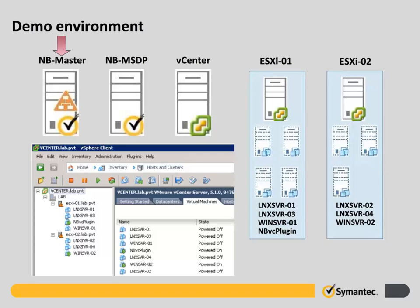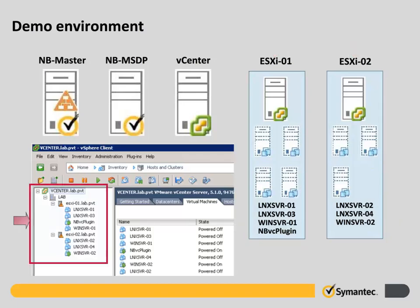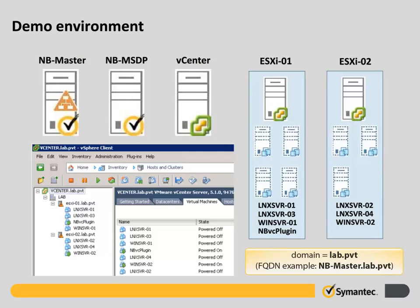First, the NetBackup 7.6 master server is a system named nb-master. This system also has the VMware vSphere 5.1 client installed. The NetBackup Media Server is a system named nb-msdp, configured as a media server deduplication storage server with its associated disk pool and storage unit. The system named vCenter is a VMware Virtual Center server running vCenter Server 5.1. There are two VMware ESX 5.1 servers named ESXi-01 and ESXi-02. ESXi-01 has four virtual machines and ESXi-02 has three. The domain name of the lab environment is lab.pvt.